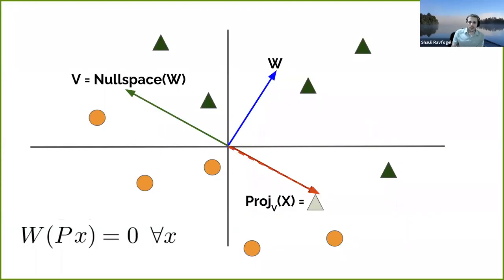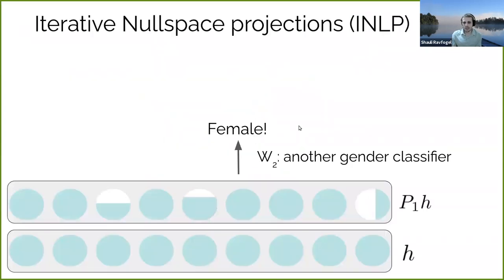What I've described so far is protection against a single linear classifier. We trained a linear classifier to predict gender and performed an operation ensuring that specific classifier can no longer predict gender. But we observed empirically that after this operation — starting from the original H and getting the de-biased H by multiplying by the projection matrix — we can still train another classifier W2 on the de-biased representation, and this classifier often succeeds, achieving significantly above majority accuracy. So there is remaining information even after removing a single dimension.